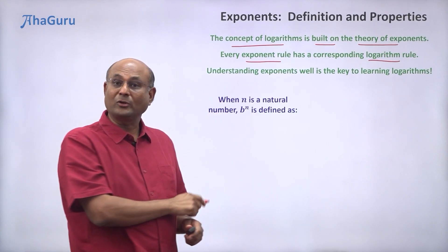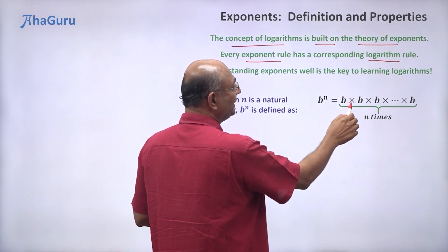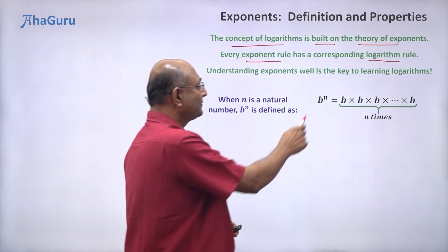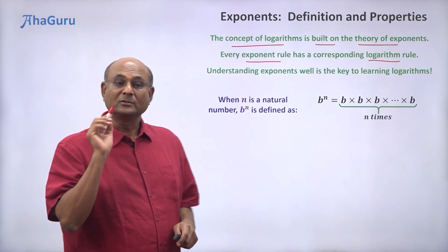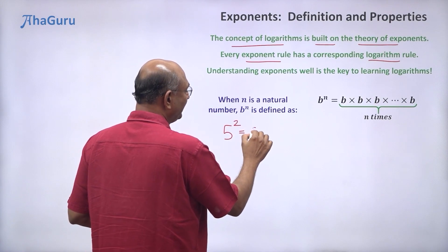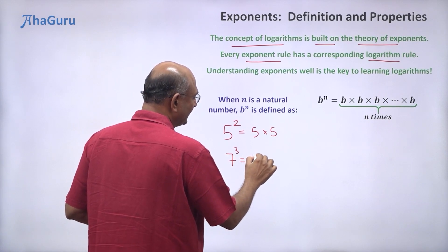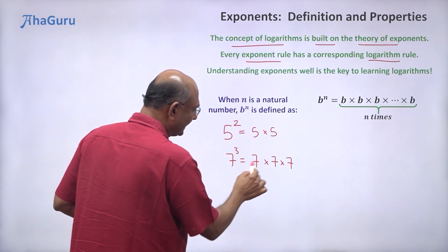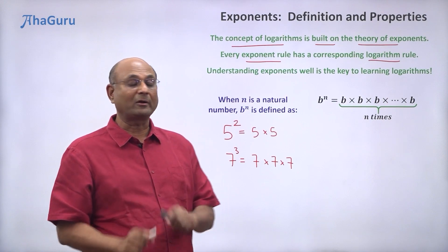When n is a natural number, b to the power of n is defined as b into b into b into b, n times. So if there are n of these b's multiplied together, we call it b to the power of n. For example, 5 to the power of 2 means 5 into 5. And 7 to the power of 3 is 7 into 7 into 7 — 3 times 7 is multiplied, written as 7 to the power of 3.